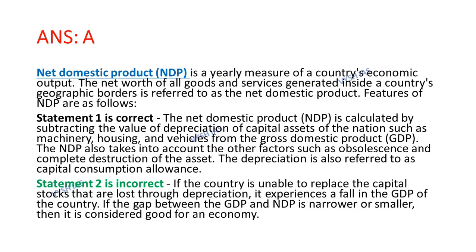Now let's look at the explanation. First of all we should know what is net domestic product. Net domestic product is the net worth of all goods and services generated inside a country's geographic border. Statement 1 is correct because NDP is calculated by subtracting the value of depreciation of capital assets of the nation — such as machinery, housing, and vehicles — from the gross domestic product. The NDP also takes into account other factors such as obsolescence and complete destruction of the asset. The depreciation is also referred to as capital consumption allowance.